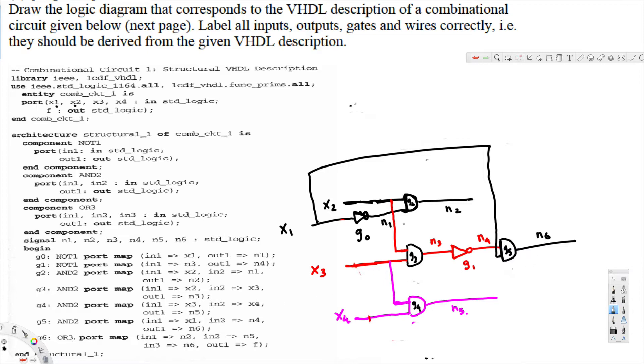Finally, we have an OR gate. For this one, input is n2, n5, and n6. It should be somewhere here. These are the inputs for this one and the output is f. That's it. That's the given circuit. That's how we design the circuit from the given VHDL code.